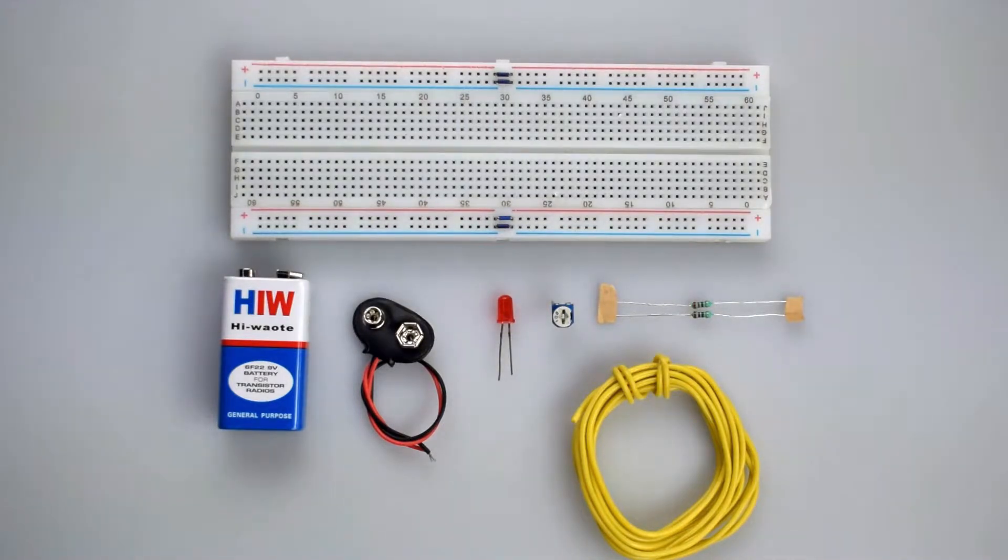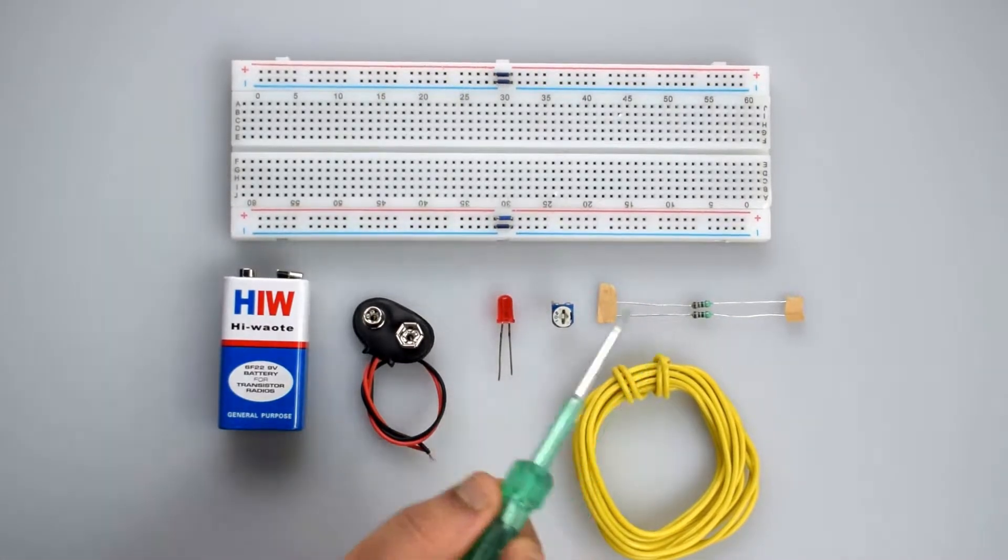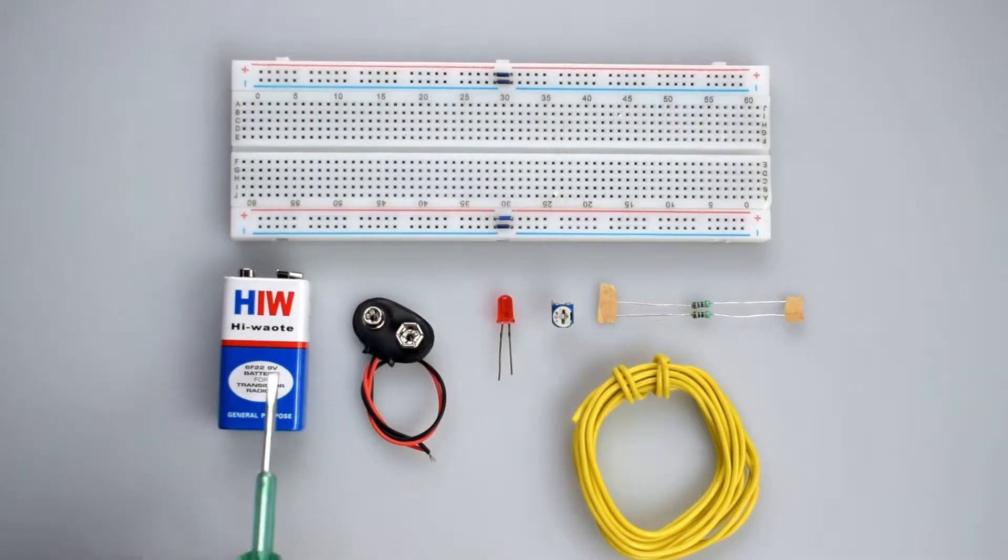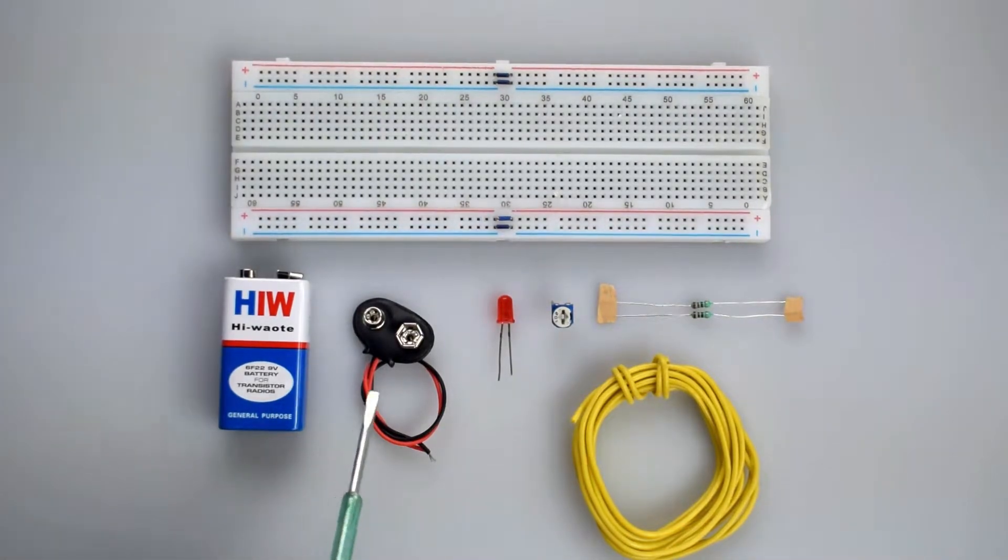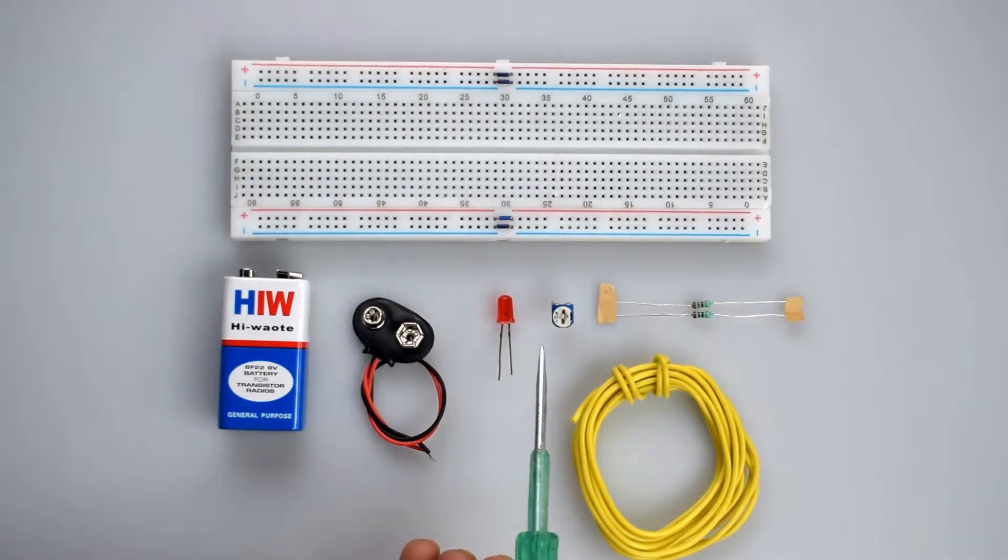To make this project, we need a 10k potentiometer, an LED, a 470 ohm resistor, the breadboard, and a 9-volt battery with snapper and screwdriver to rotate the knob of the potentiometer.